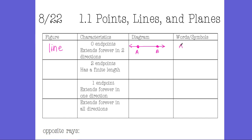The way to name a line is to write any two points it passes through and draw a line on top — I must use arrows to indicate it's a line. It doesn't matter what order I write the points; I can call this line AB or line BA. I could add point C and call it line AC. I just choose two points, not three — writing line ACB would be incorrect.